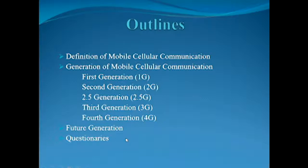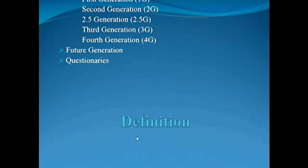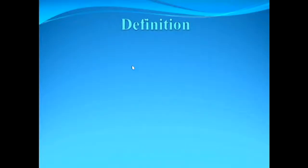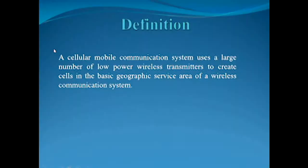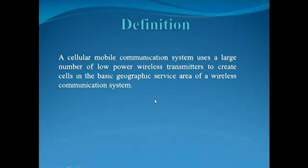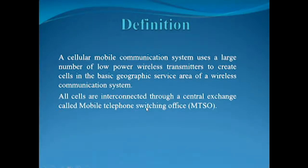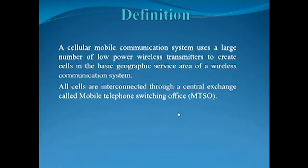At last I will try to answer your questions. The definition: a cellular mobile communication system uses a large number of low power wireless transmitters to create cells in the basic geographic service area. All cells are interconnected through a central exchange called the Mobile Telephone Switching Office, that means MTSO.